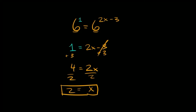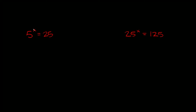Now let's get into what you do when the bases are different. So we have 5 raised to the x is equal to 25. You might even be able to do this one in your head, but unfortunately they're not all going to be so easy. The whole point is you want the bases to be the same. We have a 5 and a 25, but 25 is the same thing as 5 squared. So we're going to replace 25 with 5 squared, giving us 5 raised to the x is equal to 5 squared.